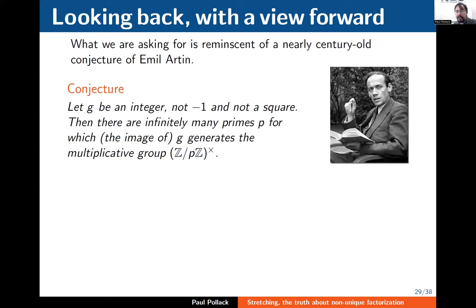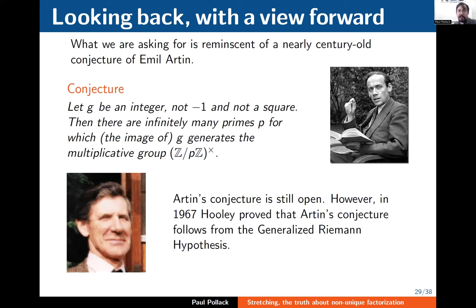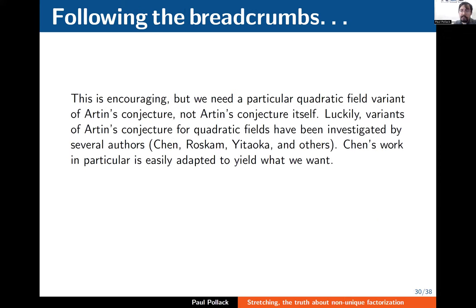This is a question an analytic number theorist can really wrap their head around because it looks very much like an old conjecture of Emil Artin. Artin said: take an integer g, not -1 and not a perfect square — are there infinitely many primes p for which g generates the multiplicative group (Z/pZ)×? In my problem, I have a fixed ε, a group varying with p, and I'm asking whether ε generates the group mod p infinitely often. Artin's conjecture is still open, but it's settled under GRH — this was done by Hooley in 1967.